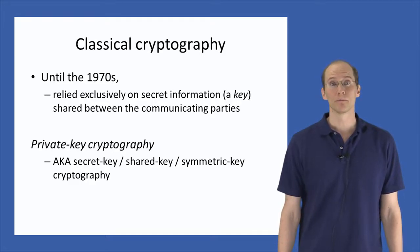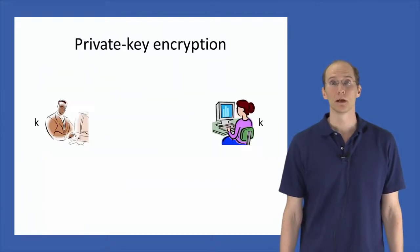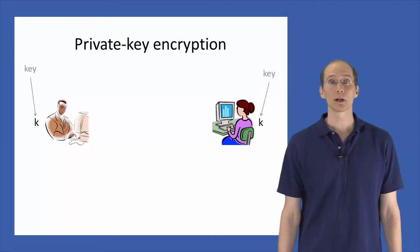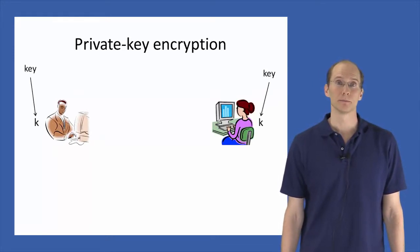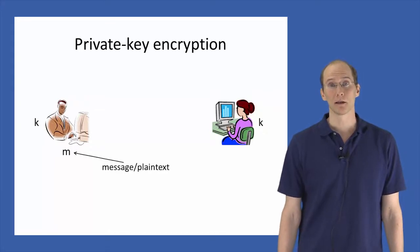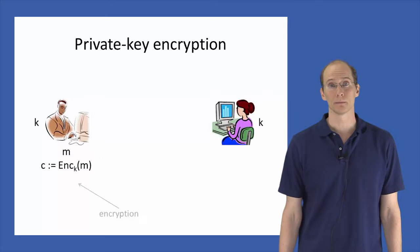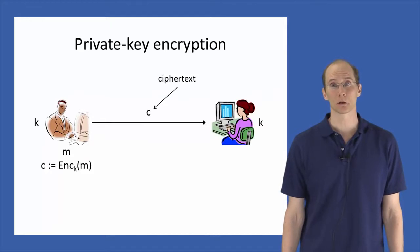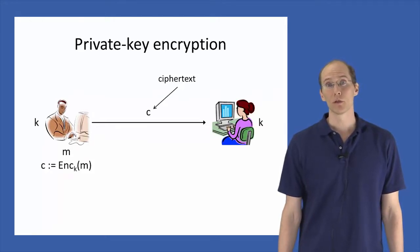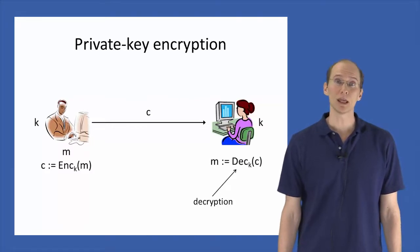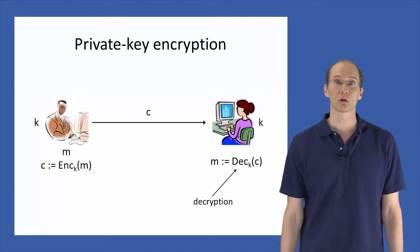So, in the setting of private key encryption, we have two users, often called Alice and Bob, who share some secret information, a key, in advance. When Bob has a message or a plaintext that he wants to send to Alice, he will encrypt that message using the shared key. This generates a ciphertext that he sends to Alice over a public communication channel. Alice can then decrypt that ciphertext using the shared key to recover the original message. Informally, the security guarantee we want is that no eavesdropper who can observe the ciphertext sent across the channel can figure out anything about the underlying message.